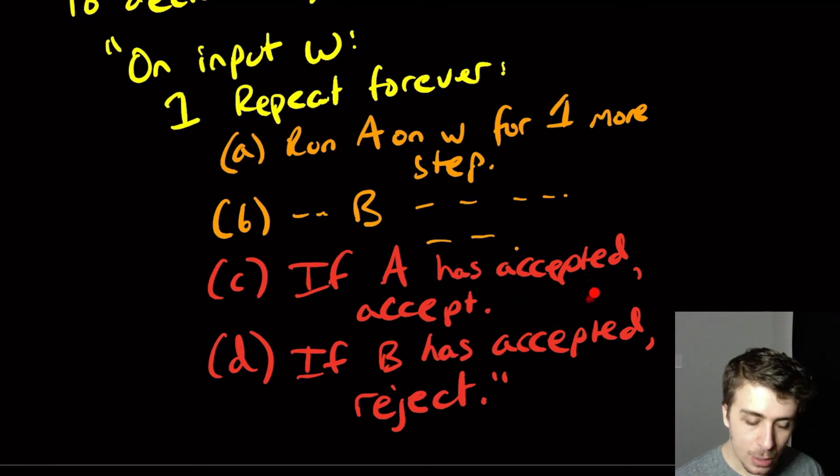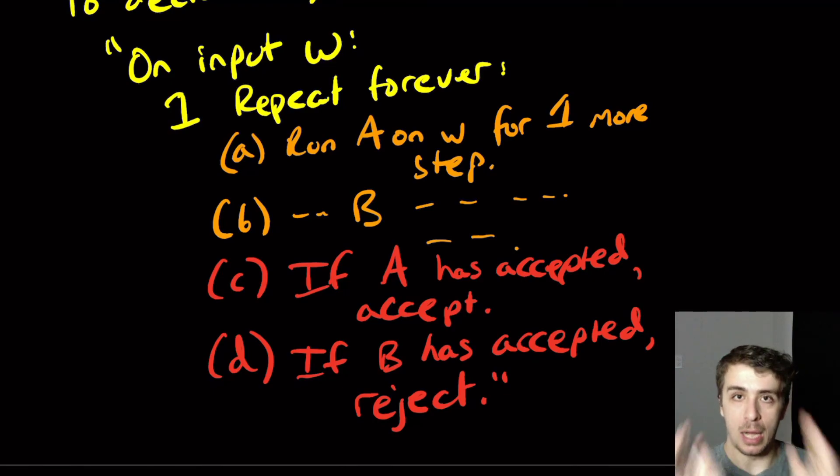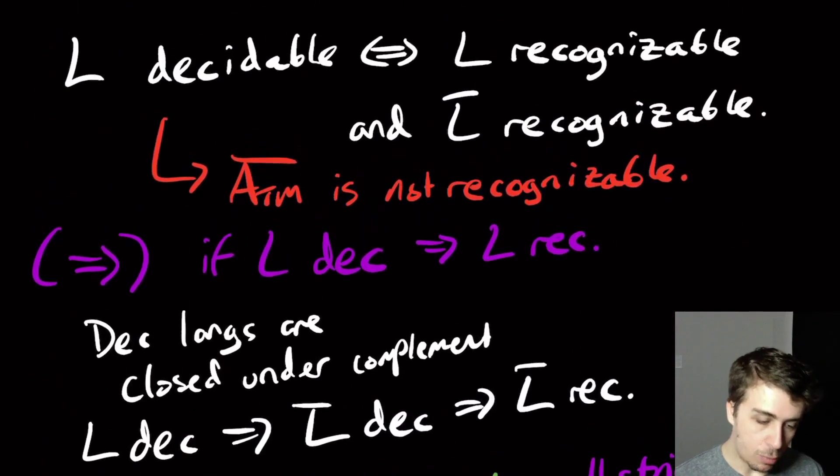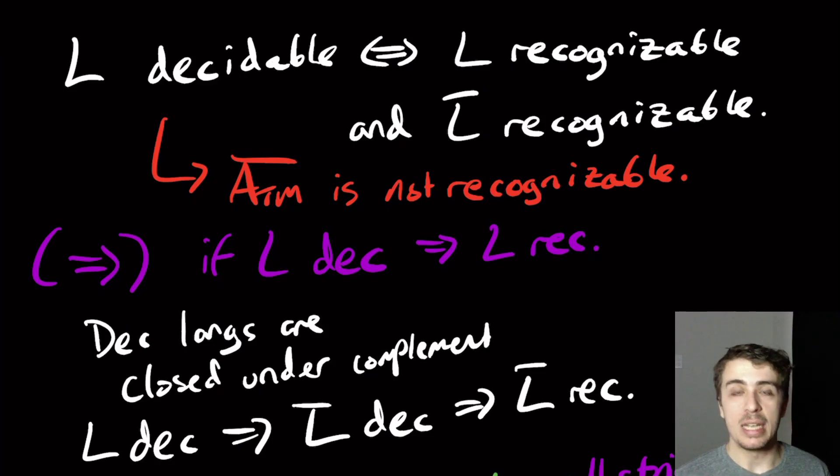And notice that I haven't said anything about whether A rejected or whether B rejected. You could add steps in here to handle that, but there's no need because we don't know anything about these machines at all, other than that they have to accept on the strings that are in their language. And every string is in either this language or this language. And then therefore we can decide this language. So we have shown that decidable languages, if and only if they are recognizable and their complement is also recognizable.